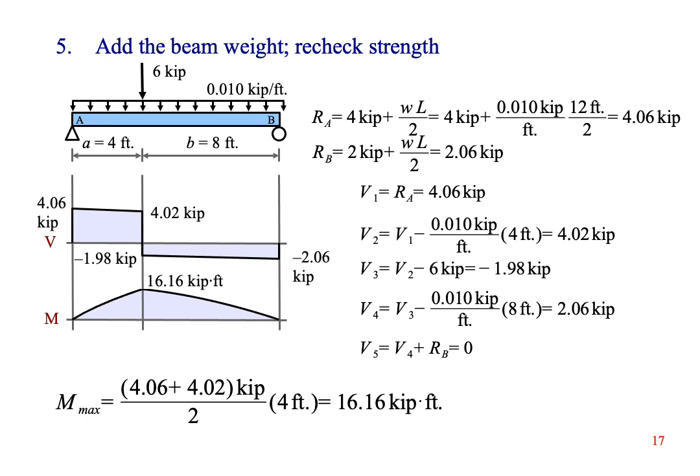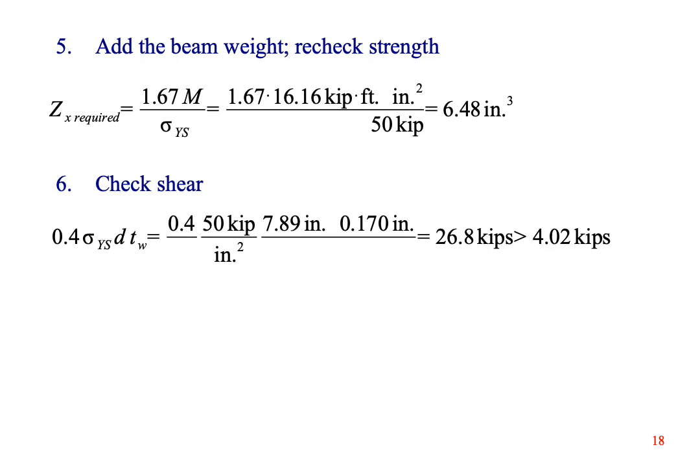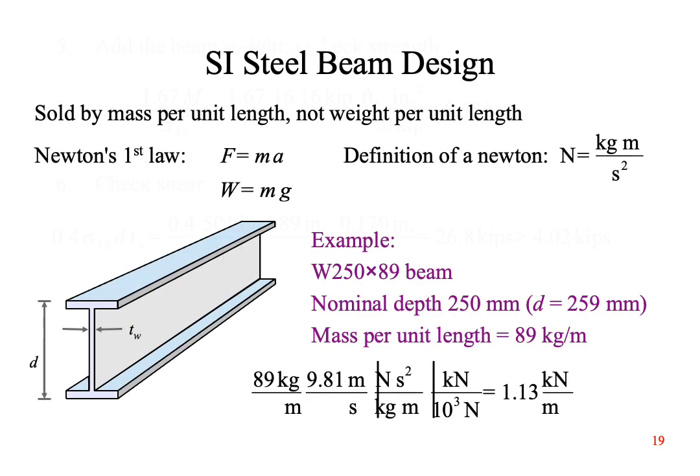The shear diagram has trapezoids and the moment diagram has parabolas. The maximum shear load is 4.06 kips. The maximum moment is 16.16 kip feet. Now we can recalculate Z and we find that we need 6.48 inches cubed. Again, we have more Z than we need and the beam is safe in bending. Finally, we check shear and again, we have more than we need.